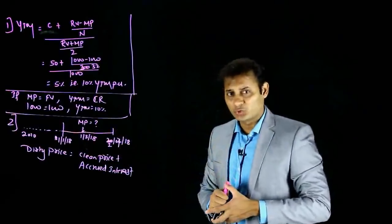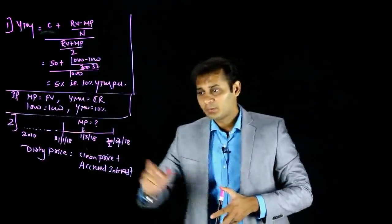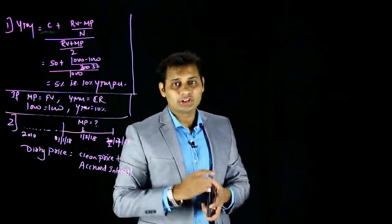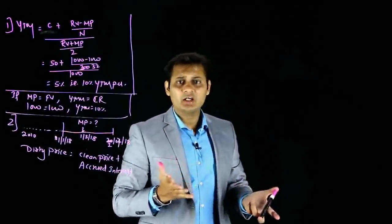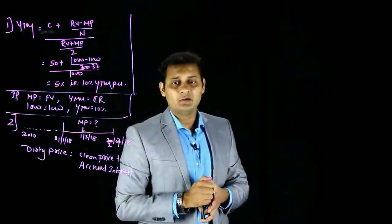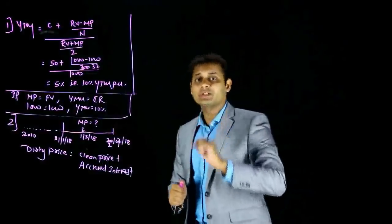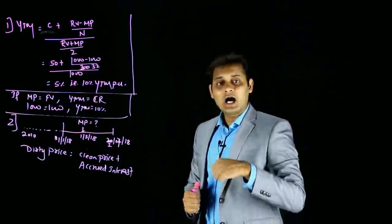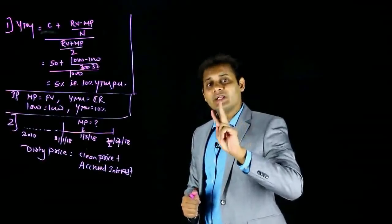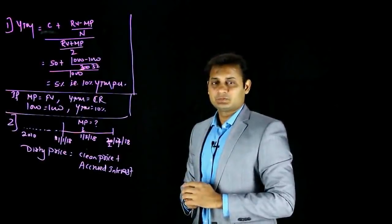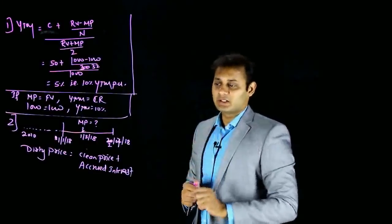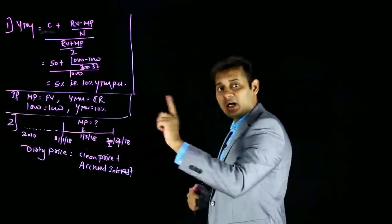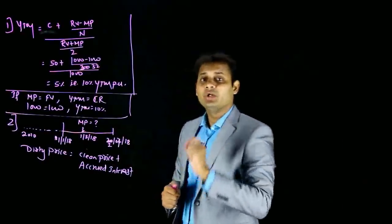You bought the bond on January 1, 2018 for ₹1,000. Interest of ₹50 will be received on July 1, 2018. But if you want to sell on March 1 — just 2 months later — you cannot collect ₹1,050; you can only collect ₹1,000 plus 2 months of accrued interest, which is ₹16.67. That total of ₹1,016.67 is the dirty price. We buy bonds at the dirty price, which includes accrued interest.